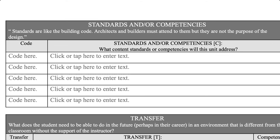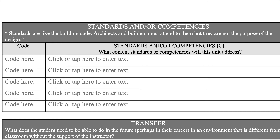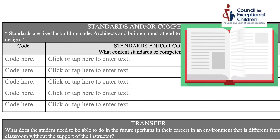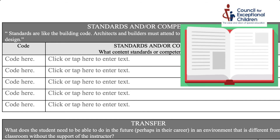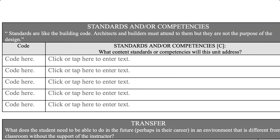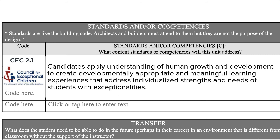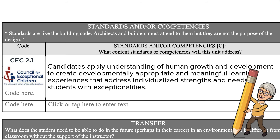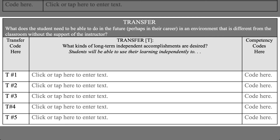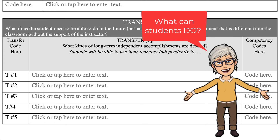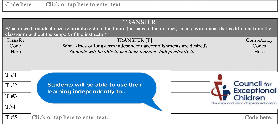In the next section, we specifically identify the standards or competencies — going through those standards to see which are appropriate or connected to the unit we are teaching. For example, in my unit I'm looking at the Council for Exceptional Children competencies and standards as they apply to students learning how to write individualized education programs. In the transfer section, I outline what I want students to be able to do independently once they've learned what I'm trying to teach, and I attach each goal to a specific competency from my certifying or professional organization.